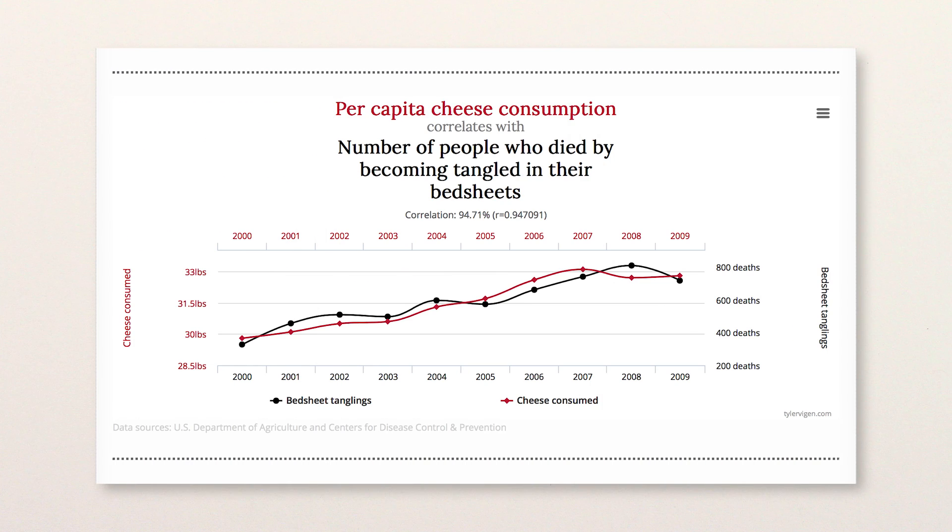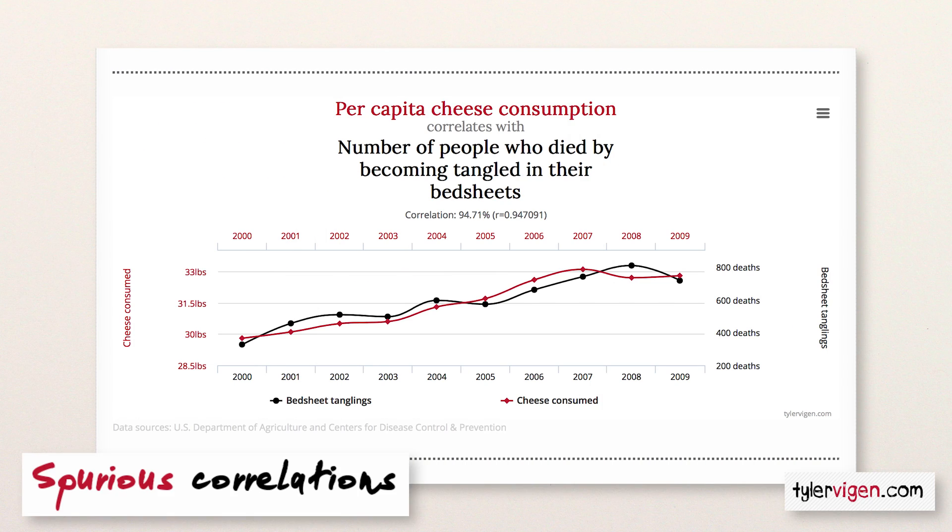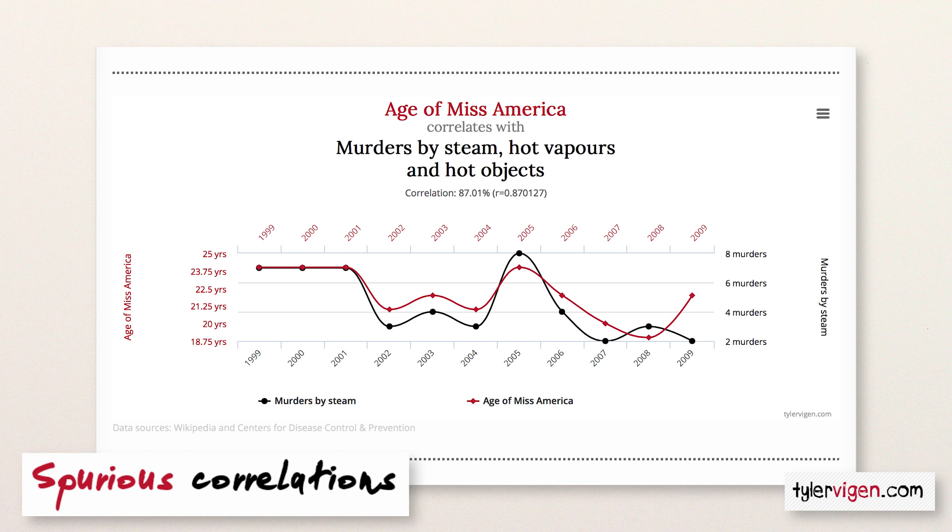But sometimes correlations occur just by chance, like those on the website Spurious Correlations, which selectively cherry picks data points from different stats that randomly happen to line up.